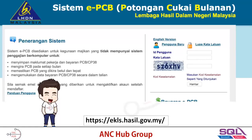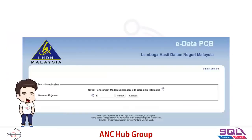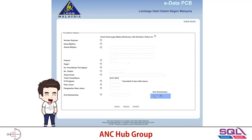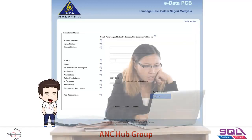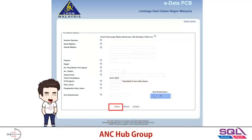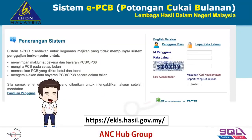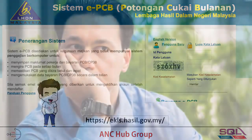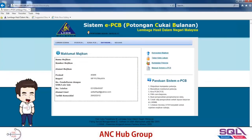Let's jump into the PCB portal. Go to ekls.hasil.gov.my. If you are a new user, click on 'pengguna baru', a new registration. They'll ask you to put in your e-number. Once you send your e-number, they'll ask you to fill up a form with your name and addresses. You just key in everything and then click send. Once completed, they will send you a confirmation email and you just need to verify the email, then you can start logging in with the ID and password. Once you log in, you will see this page.